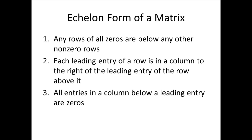For a matrix to be in echelon form, there are three rules. Rule 1: any rows of all zeros have to be below any other non-zero rows — the all-zero rows sink to the bottom. Rule 2: each leading entry of a row must be in a column to the right of the leading entry of the row above it. This is really what creates the echelon formation. Rule 3: all entries in a column that are below a leading entry must be zeros.